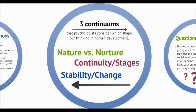The first is nature versus nurture: how does genetic inheritance and experience influence our development? The second is continuity versus stage: is development a gradual, continuous process such as an elevator, or does it proceed in a sequence of stages like a ladder? And finally, stability versus change: do our early personality traits persist through life, or do we change as we age?